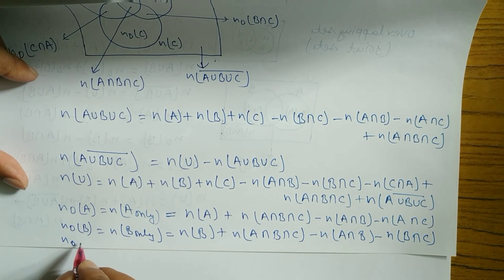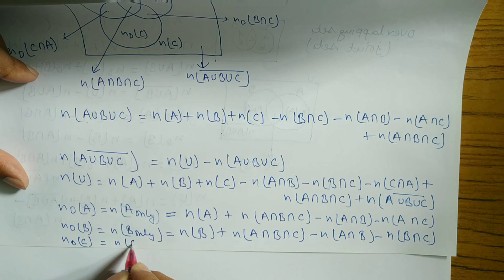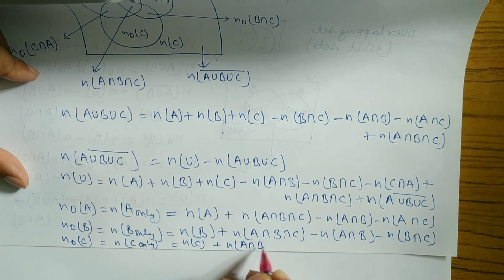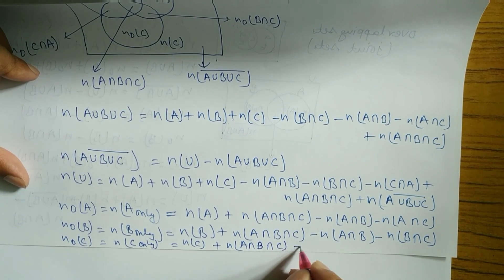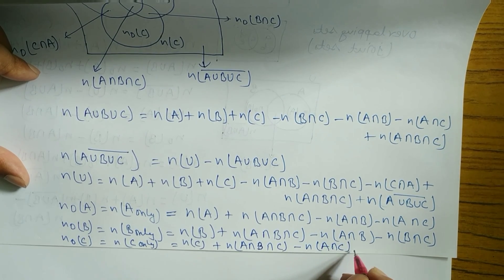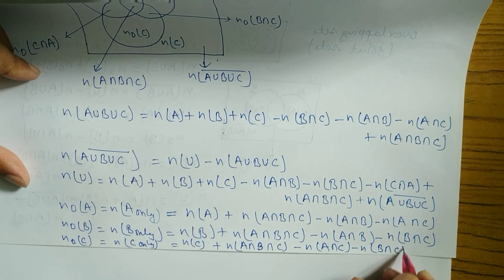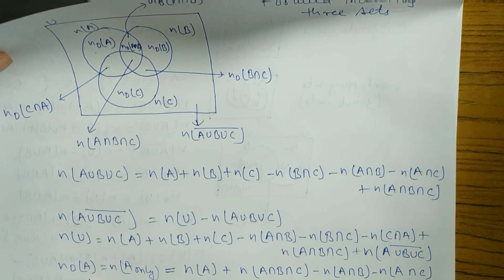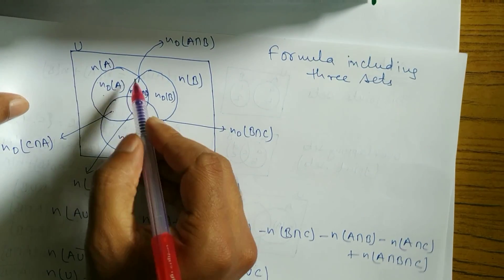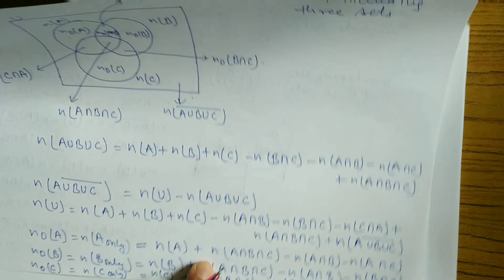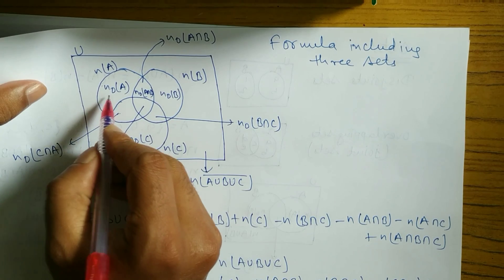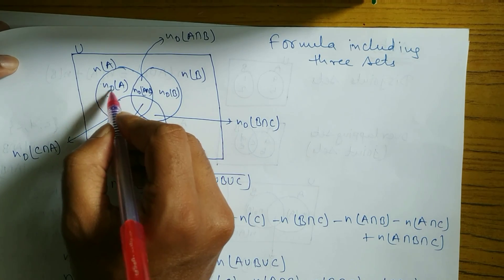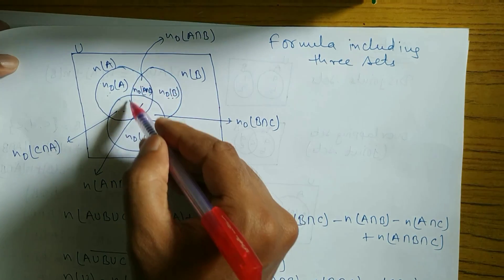To find n(only C): n(only C) = n(C) + n(A∩B∩C) − n(A∩C) − n(B∩C). For n(only A): from n(A), which includes the whole circle, you subtract the parts shared with B and with C to isolate only A.